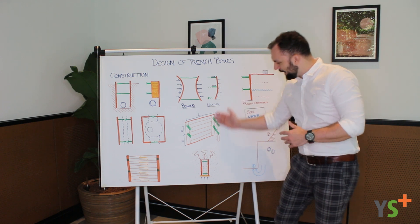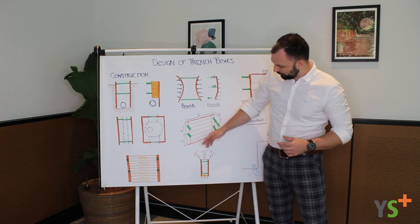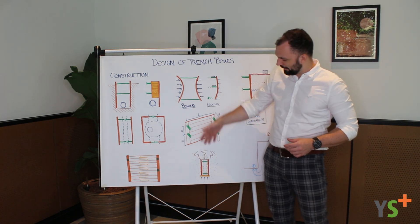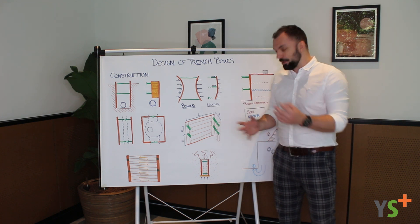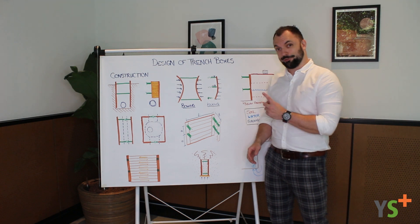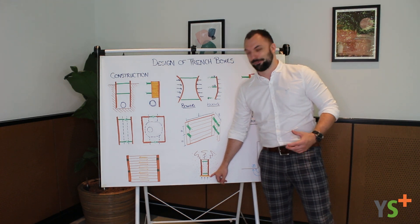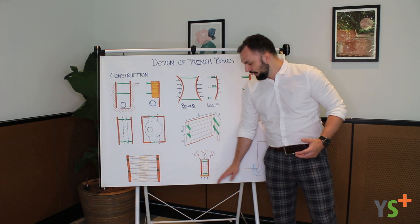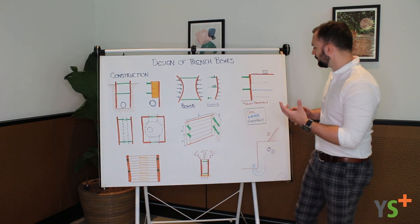The last thing is at the ends of the excavation. Normally you would batter it down, so the ground at the end - we're looking on plan here - the ground at the end we would batter that down so it's a safe slope and it's not going to cave in. But you can't always do that, so one addition that's included in Your Solution Plus is the design of these end panels, which you can span across the ends of a trench box or a manhole box, and they will support a vertical face of ground at that end as well.